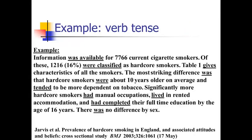Here's an example: 'Information was available for this many smokers. Of those, 1216 were classified as hardcore smokers' — notice the passive voice there. But then we get 'table one gives' — switching from past tense to present tense, because table one is still giving those characteristics. Everything else talking about things already measured in a study is in the past tense.